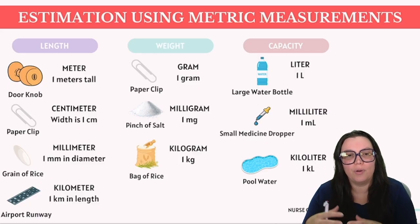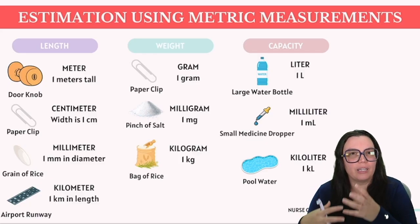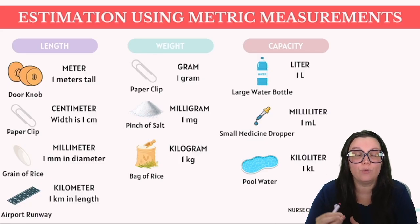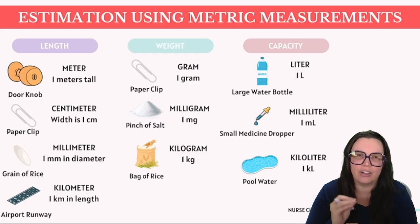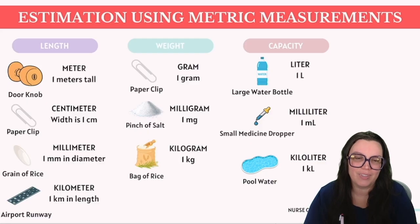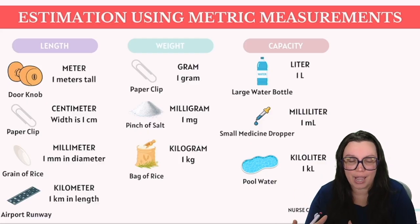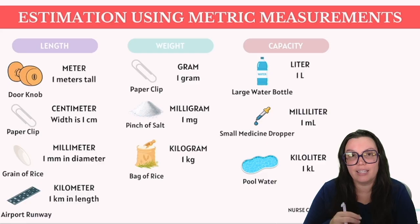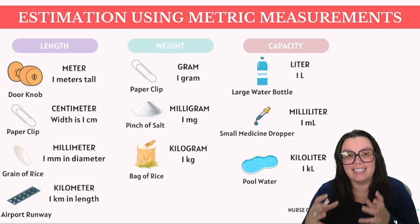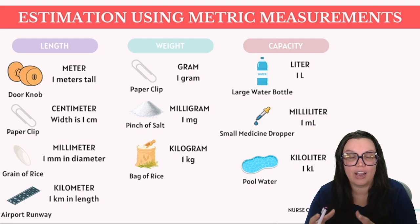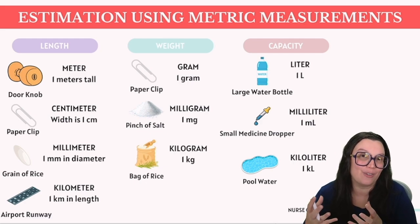Next up we have weight. Approximately, a gram is equal to the weight of a paper clip — very, very light. One milligram is essentially the same weight as a pinch of salt. And one kilogram is approximately the weight of one bag of rice.